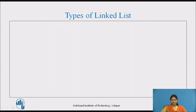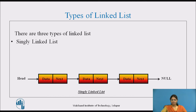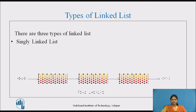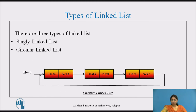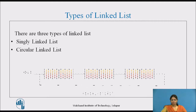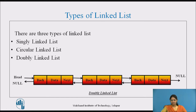Let's see the types of linked list. There are three types. The first is the singly linked list, which has a single link to the next node and the last node is terminated by null. The second is the circular linked list, where the null part of the last node is replaced with a link pointing to the first node. The last is the doubly linked list, which has two links — one to the next node and another pointing to the previous node.